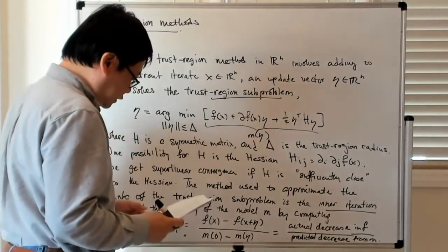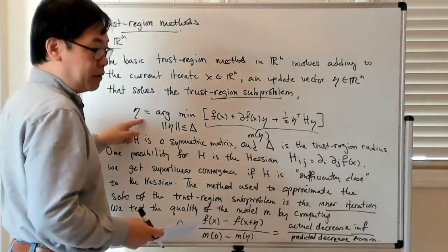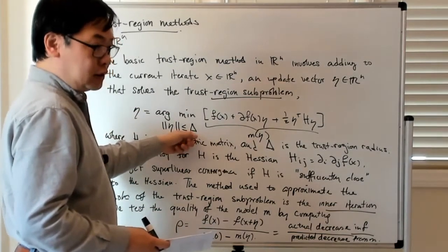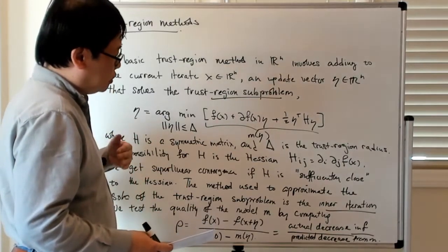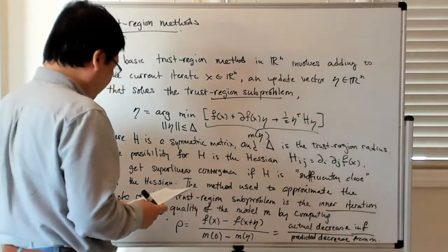And then depending on the value of this, you can do several things. You can reject the actual step and decrease the trust radius, or you could accept the step but decrease the trust radius, or you could accept the step and increase the trust radius, so some variant there are.